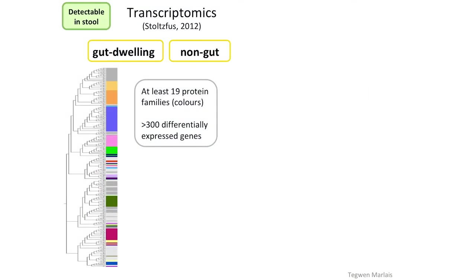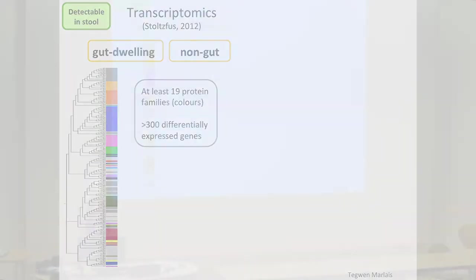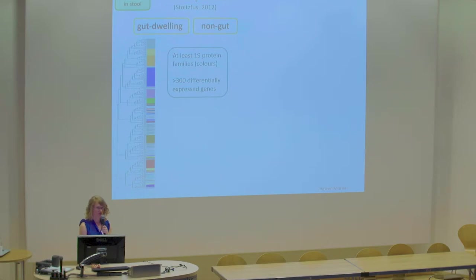I used entirely open access datasets to do this analysis. This was a transcriptomic dataset published in 2012, consisting of seven life stages — gene expression from seven different life stages — which I grouped into those dwelling in the gut and those not in the host gut. I did a two-way comparison of that transcriptomic data, which identified more than 19 protein families shown in different colours. That tree consists of over 300 differentially expressed genes.